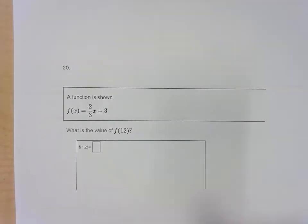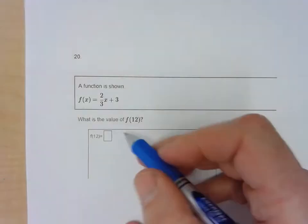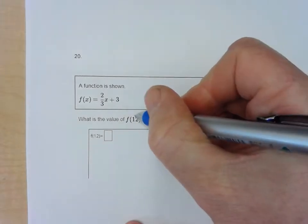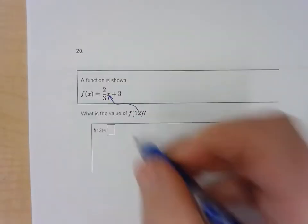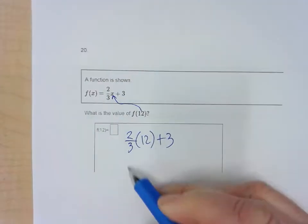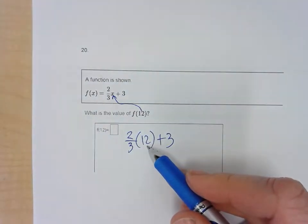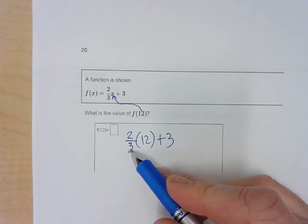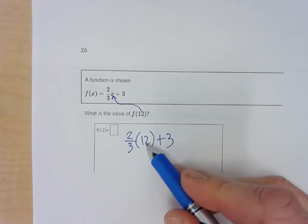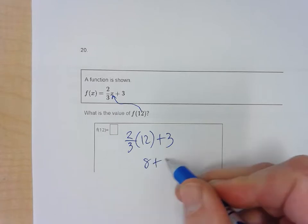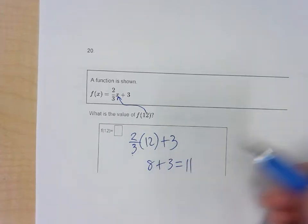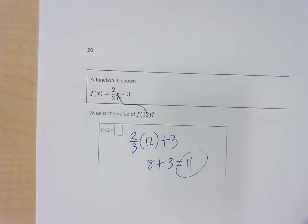Question 20: f of 12 — this doesn't mean f times 12. It means put 12 in for x. So it's two-thirds times 12 plus 3. Three divides into 12 four times; 4 times 2 is 8. So it's 8 plus 3, which is 11. You can also type two-thirds times 12 plus 3 into your calculator to get 11.